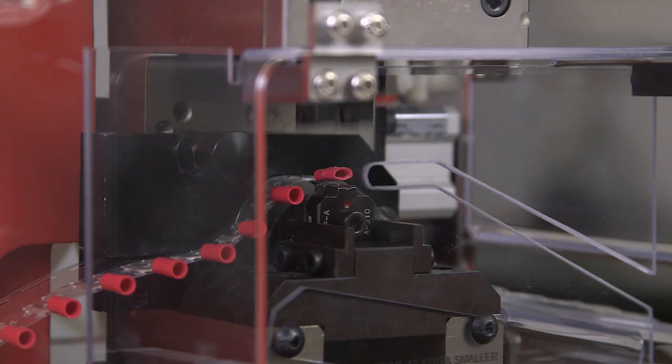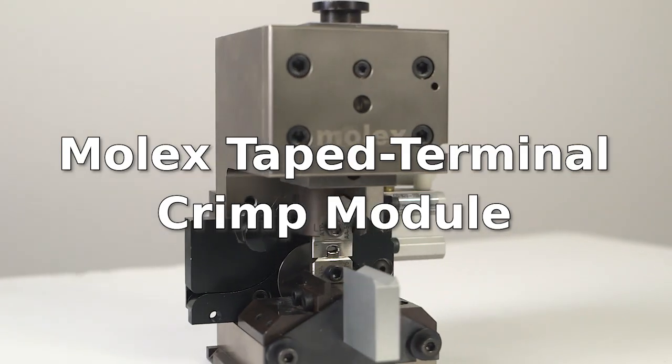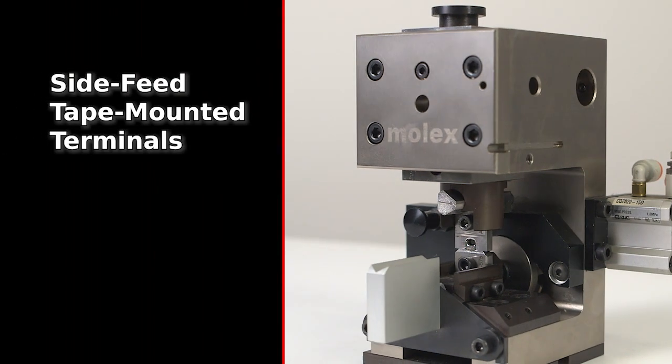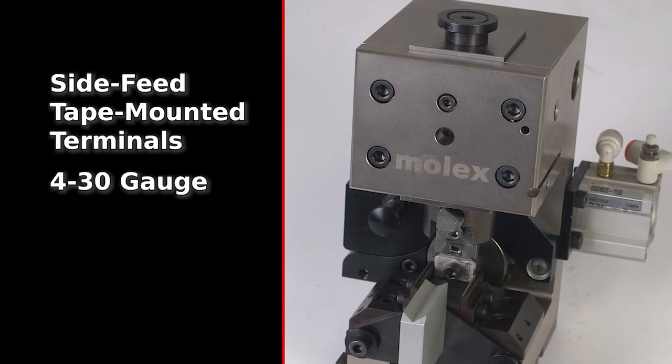upgrade your crimping process to maximize efficiency and quality. The tape terminal crimp module from Molex efficiently crimps side-feed tape-mounted terminals to pre-stripped discrete wires from 4 to 30 gauge.